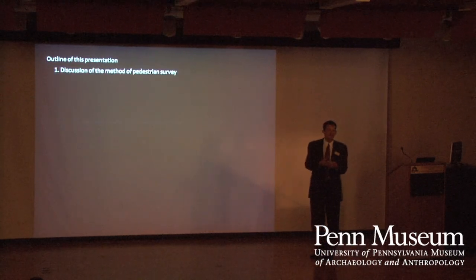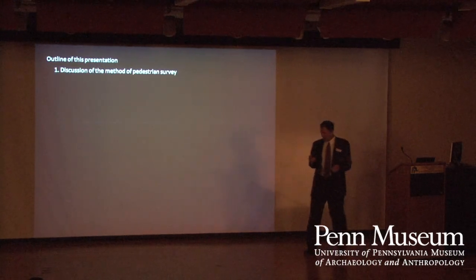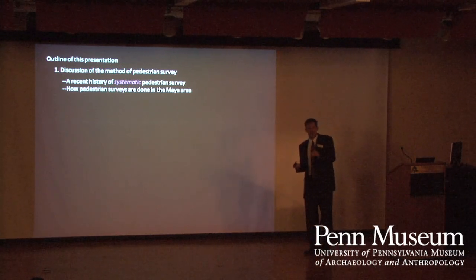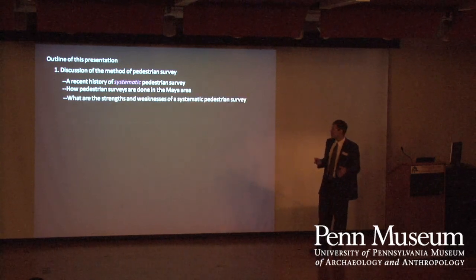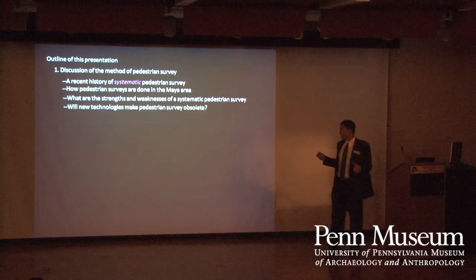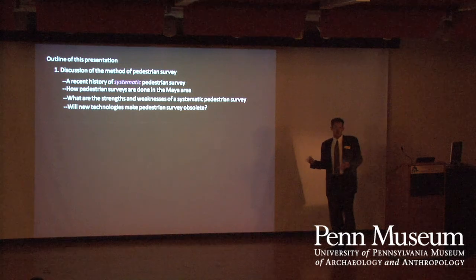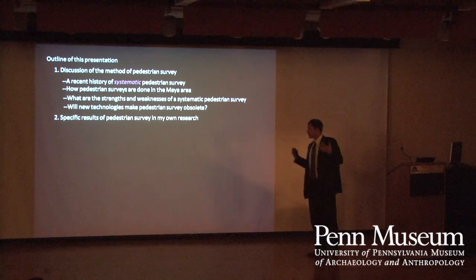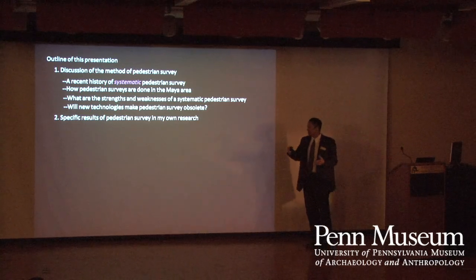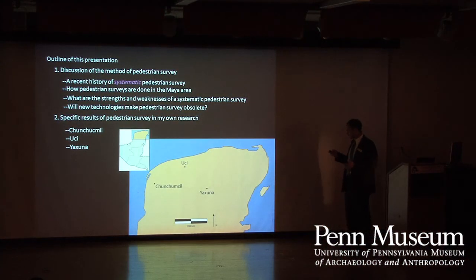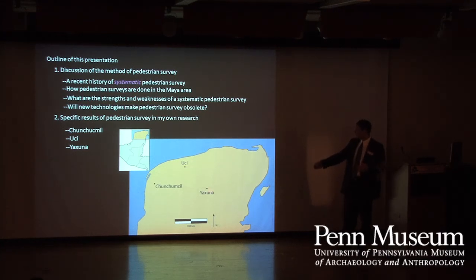In this presentation I'm going to begin by talking about the methods of pedestrian survey, a bit about the history of systematic pedestrian survey, and specifically how we do it on the ground. Then I'll move to talk about some of the strengths and weaknesses of this kind of survey, and finally whether new technologies will make this kind of survey obsolete. In the second half, I'll talk about specific results of pedestrian survey from projects I've done in the northern lowlands of Yucatan — at Chuchuchmiel, Uqui, and a little bit at Yashuna.